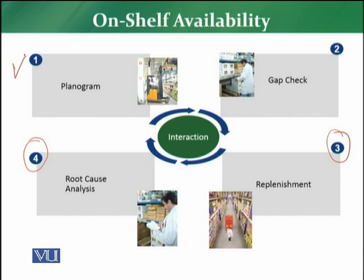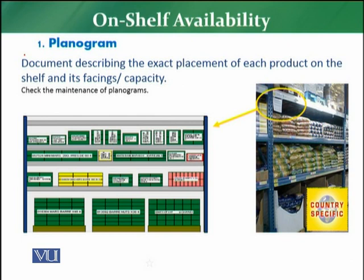First, we are going to discuss planogram in detail. A planogram is the document describing the exact placement of each product on the shelf and its facing capacity. It is the plan for every single product — placement, where to place each product on the shelf, how many facings, how much capacity, how much quantity, which size — everything has to be mentioned on the plan.